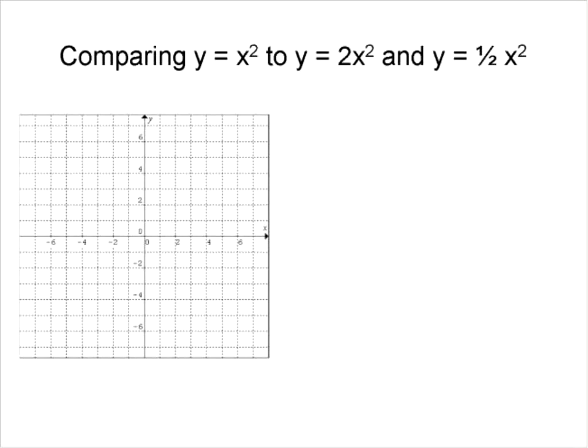We're at 0, 0, 1, 1, 2, 4, negative 1, 1, and negative 2 and 4. And we have our parabola that looks like so. That's our original.